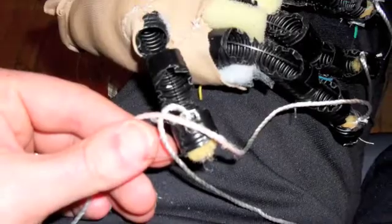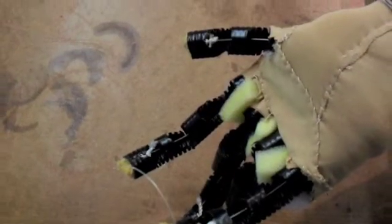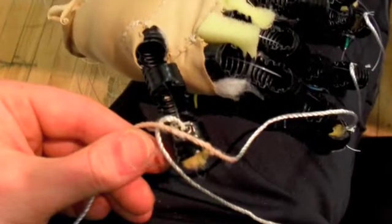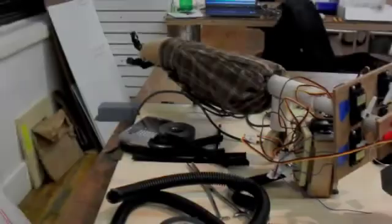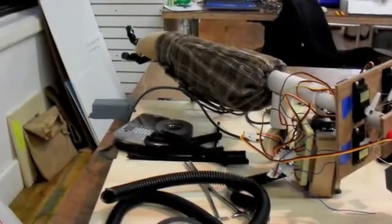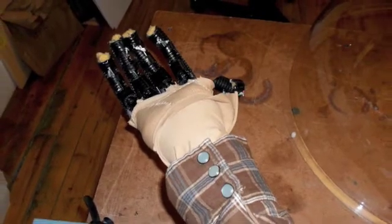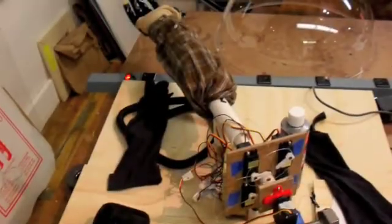That ended up being the best direction. You can see here this is where we changed out to the fishing line. The fishing line was a lot less friction and it didn't allow for as many entanglements on the inside. That was maybe one of the most tedious processes, just continually re-threading the fishing line into the robotic hand.